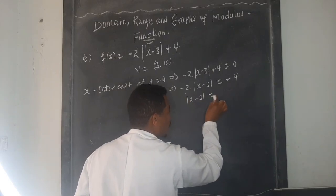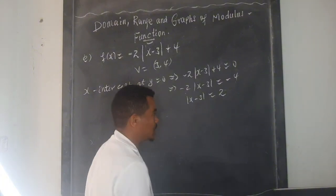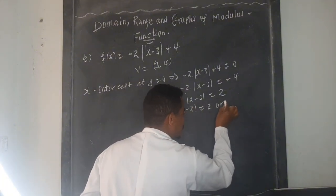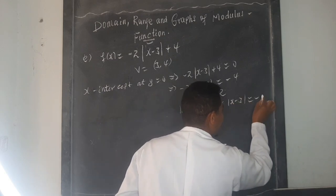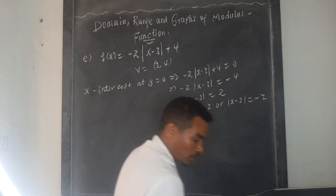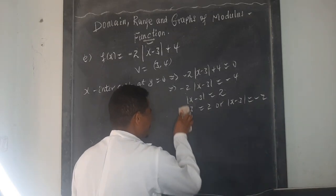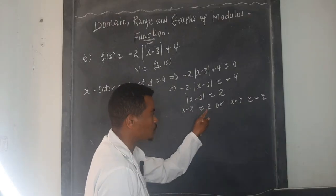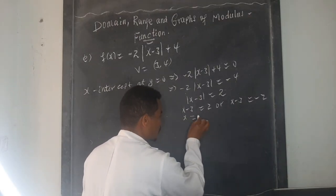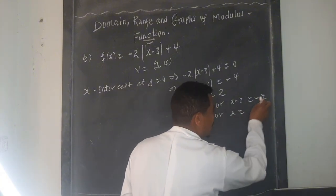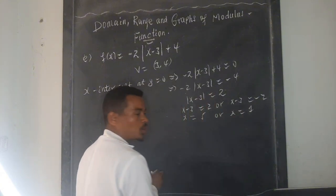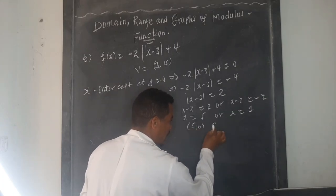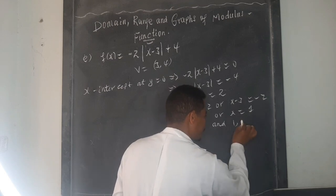From |x - 3| = 2, we get x - 3 = 2 or x - 3 = -2. So x = 5 or x = 1. The x-intercepts are (5, 0) and (1, 0).